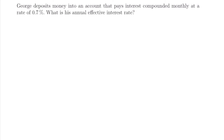Now let's look at another example. George deposits money into an account that pays interest compounded monthly at a rate of 0.7%. What is his annual effective interest rate? We see that J equals 0.7%, which is 0.007 in decimal format, and it's a monthly compound interest rate.